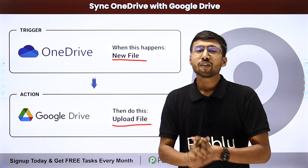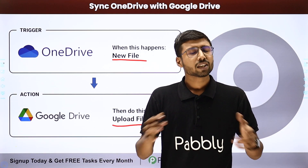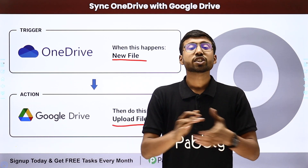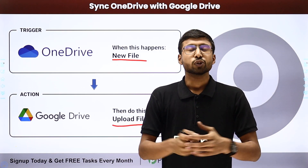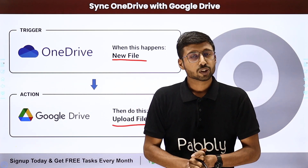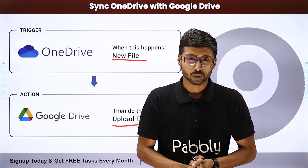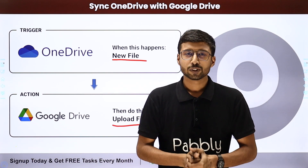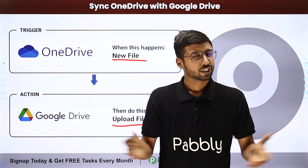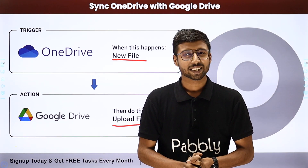These were the top 5 automation ideas you can set up with Google Drive and Pabbly Connect. You can also set up many more automations and check them all on our YouTube channel. Links to the full videos for all 5 automation use cases will be in the description below. I hope this video was helpful. If you liked it, don't forget to hit the like button, share it, and subscribe to Pabbly. Thank you, have a great day.